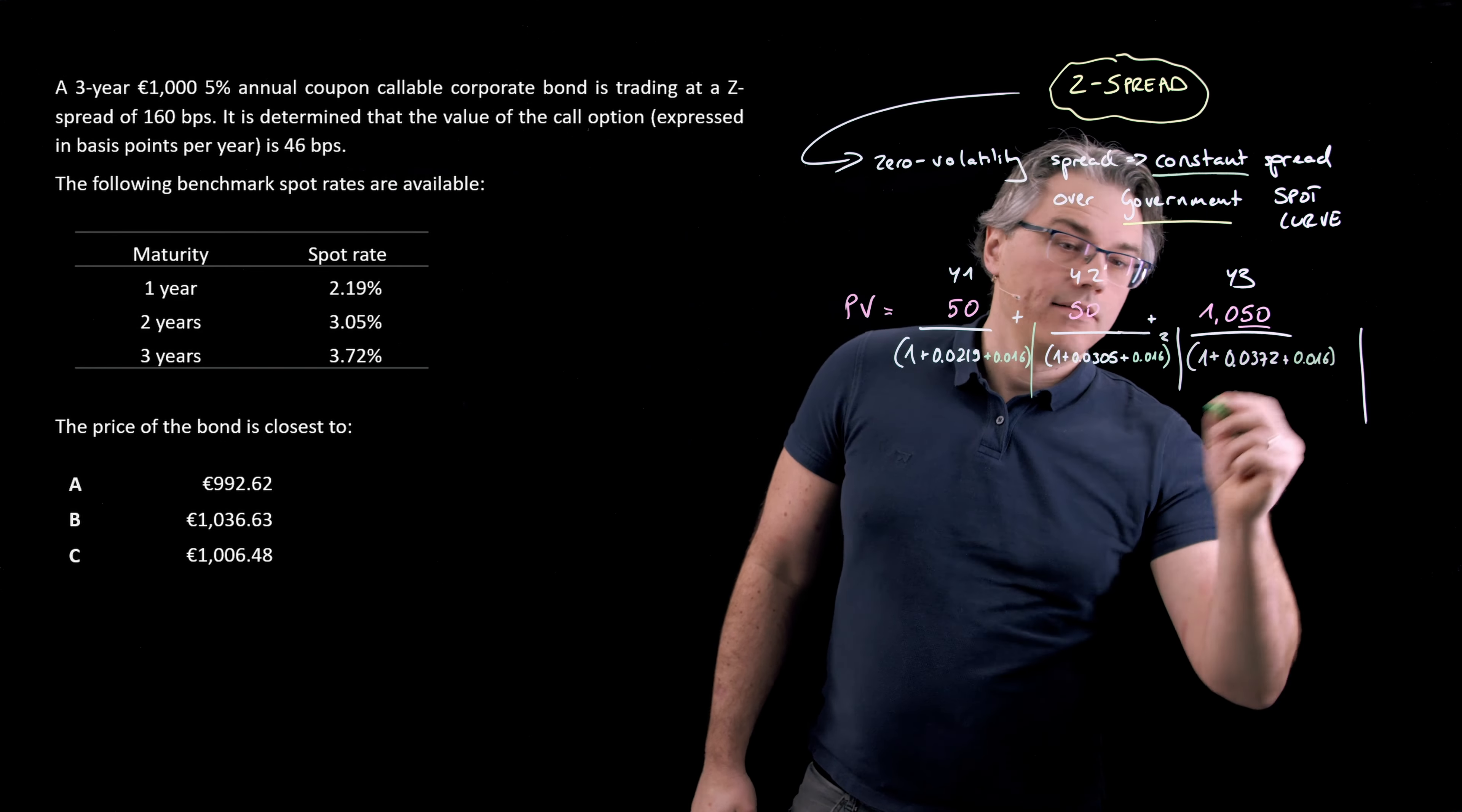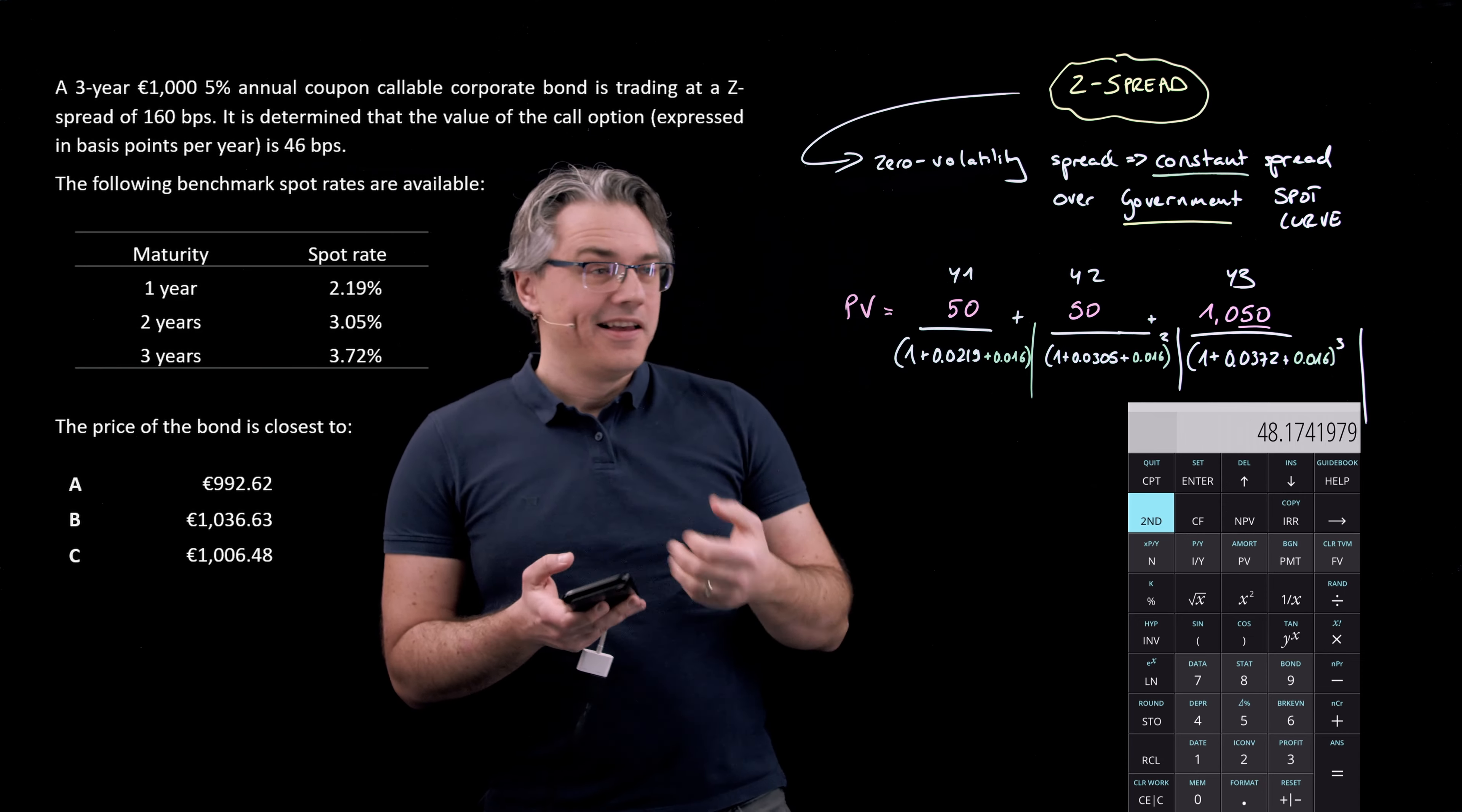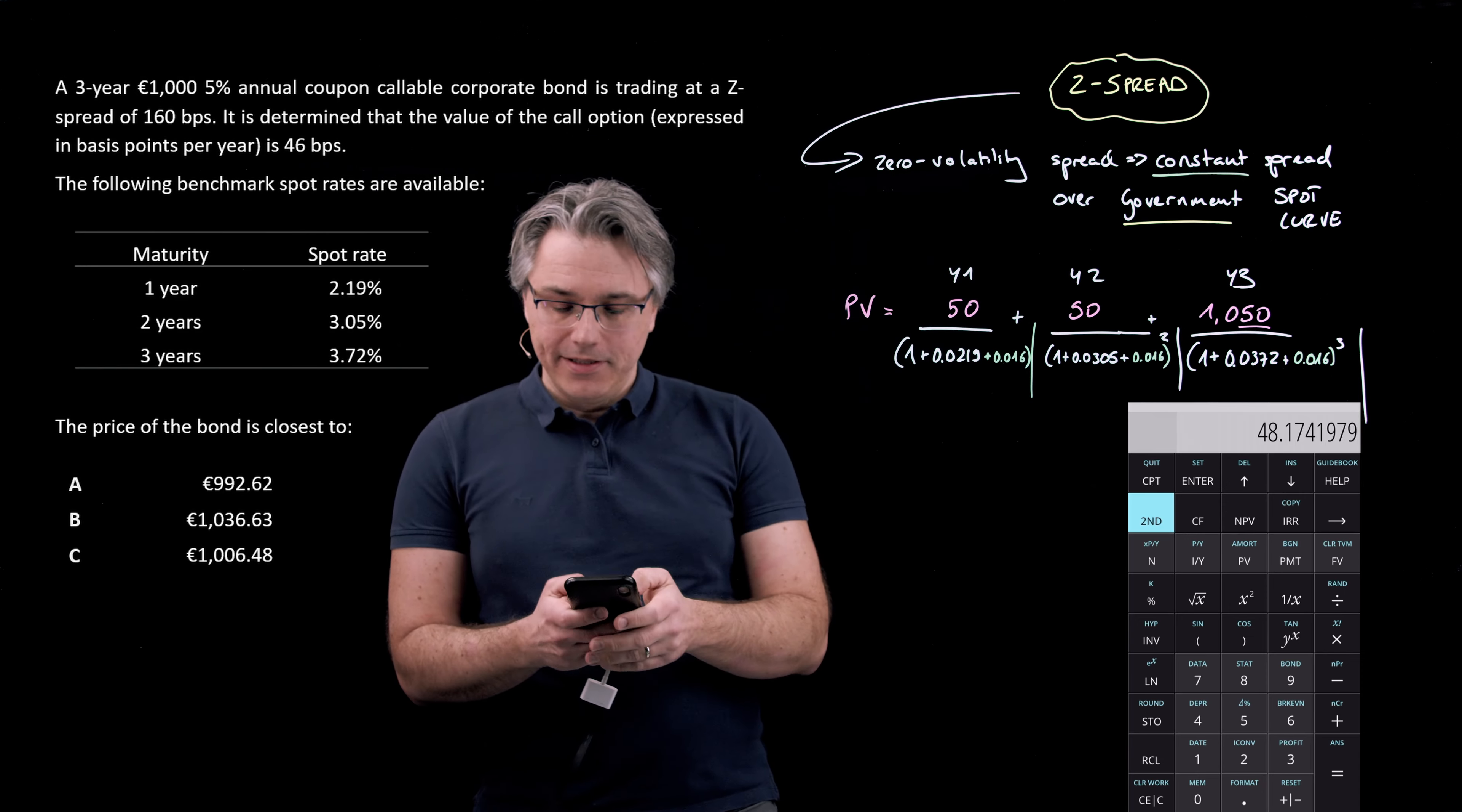Let's start with the discounting. I'm doing 50 divided by, let me open a bracket, 1 plus 0.0219 plus 0.016, close bracket, plus. That's the first cash flow discounted, and we can see the result over here. The trick here is to get these inputs right. It's so easy to get them wrong on the calculator. But hopefully, we'll get them right.